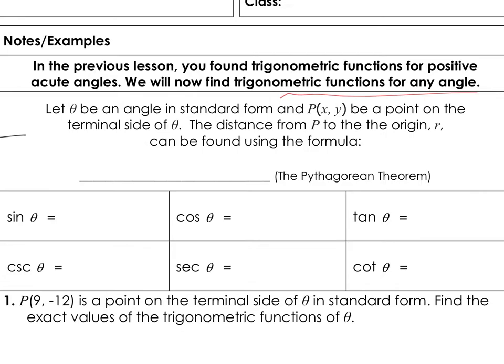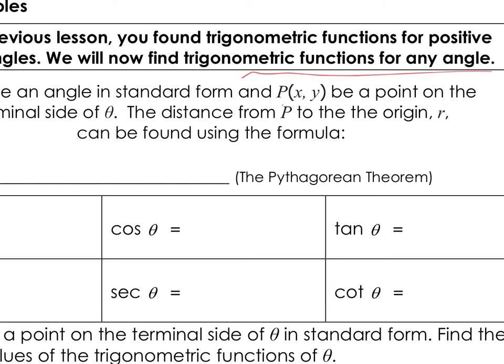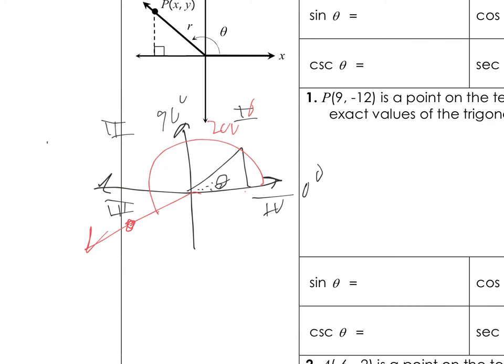Let theta be the angle in standard form, going through a point called P at coordinates X comma Y. Back to my picture — if I stopped the angle there, that point could have been negative three, negative two. You've got your X, your Y — that's my point P. I can stop that angle anywhere I want.